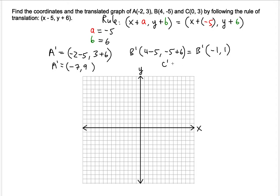And then finally the C prime will take the 0 and add negative 5, so that's the same thing as minus 5. And then 3 plus 6 plus the b value, 3 plus 6. So what that turns into is that you get minus 5 and 9.